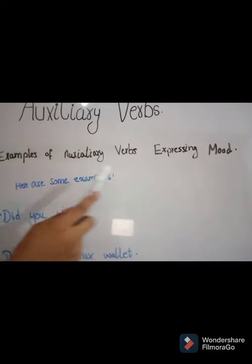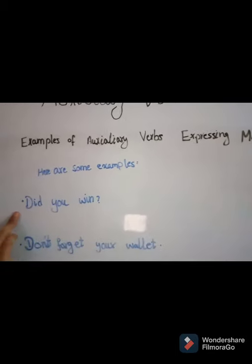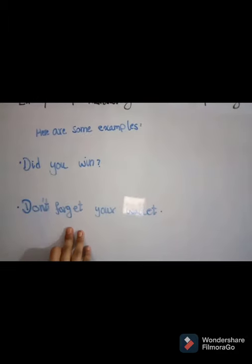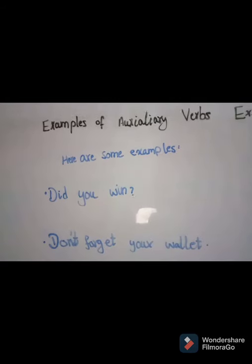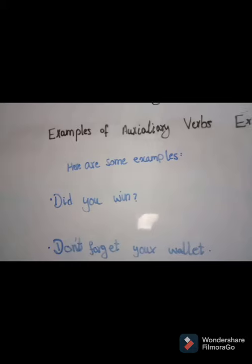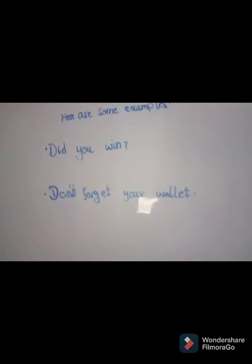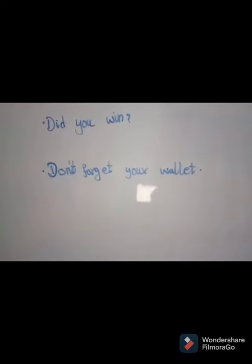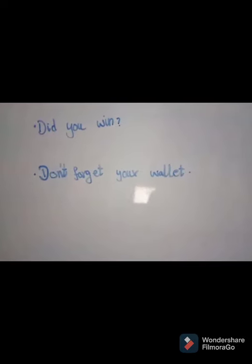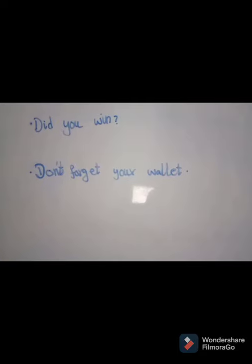Here are examples of auxiliary verbs expressing mood. First: 'Did you win?' Second: 'Don't forget your wallet.' In the first example, the auxiliary verb 'to do' is used to form the interrogative mood — to ask a question. In the second, 'don't' is the negative form of 'to do' and is used to form the imperative mood — to give an order.